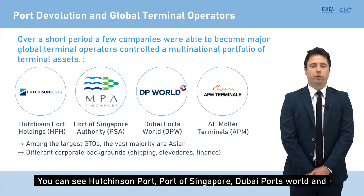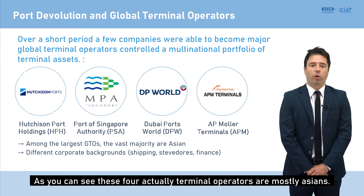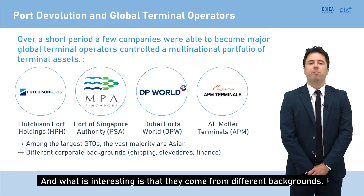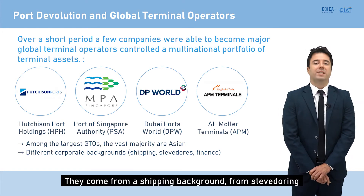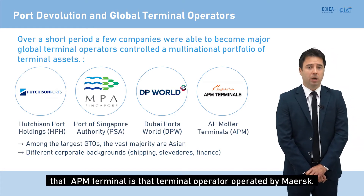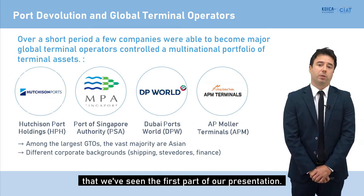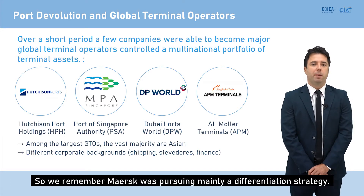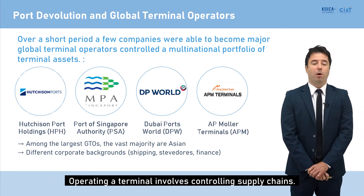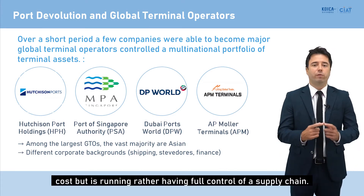The five major operators include Hutchinson Port, Port of Singapore, Dubai Port World, and APM Terminal. These four terminal operators are mostly Asian, and they come from different backgrounds: shipping, stevedoring, and financial. APM Terminal is the terminal operator run by Maersk, the number-one shipping company we saw in part one. Maersk was pursuing mainly a differentiation strategy, which is why it operates a large number of terminals — because operating a terminal means controlling supply chains, not just managing costs.